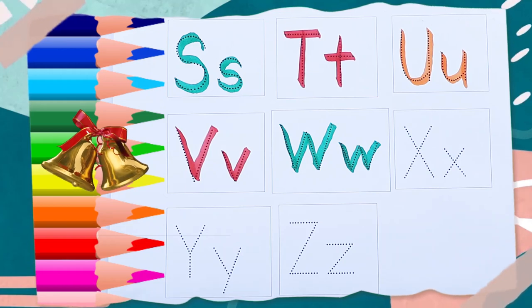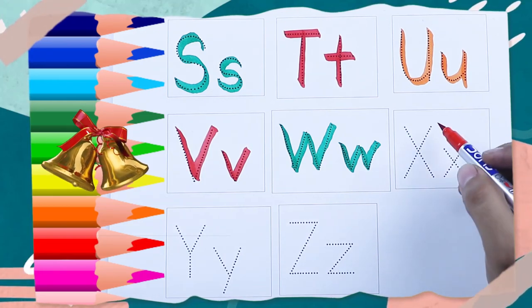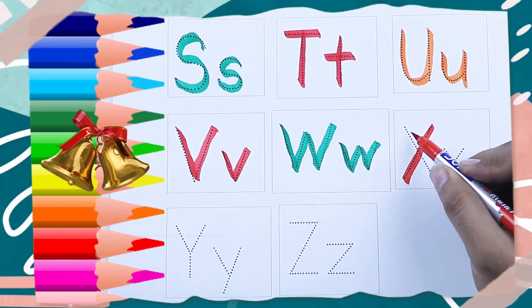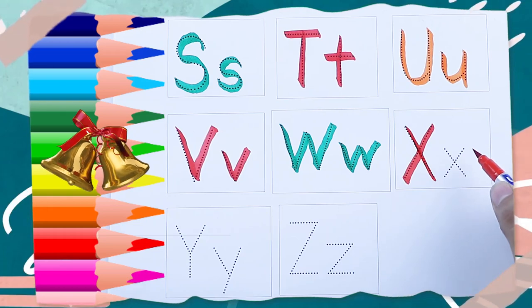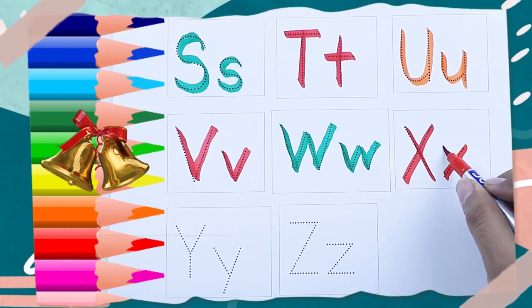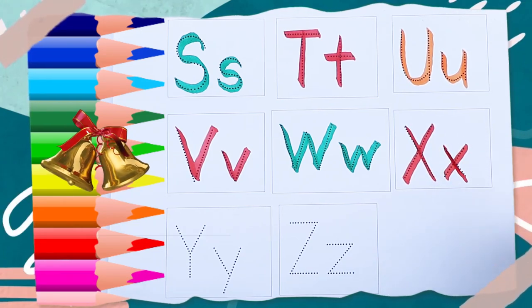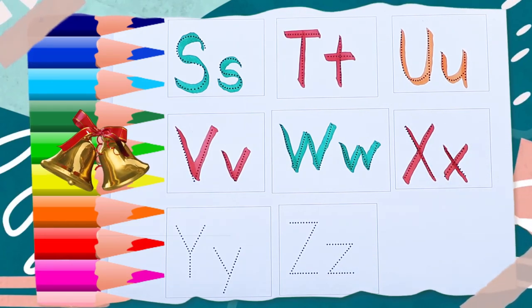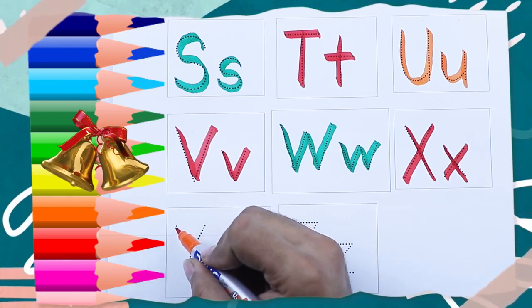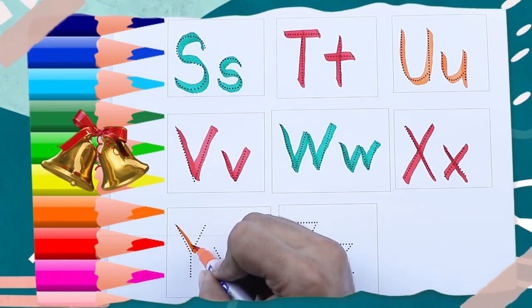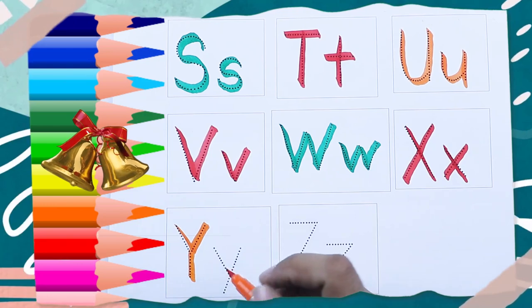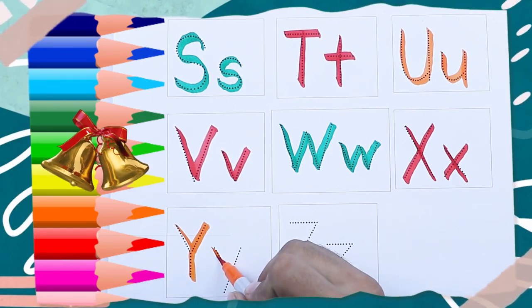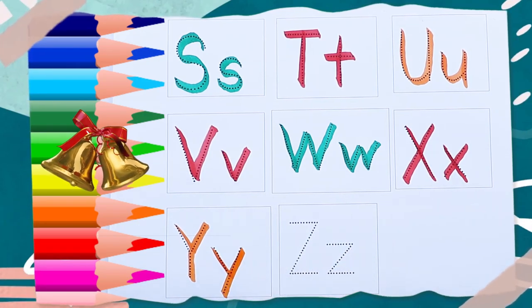Red color capital X — X for X-ray. Red color small x — x for X-ray. Orange color capital Y — Y for Yard. Orange color small y — y for Yard.